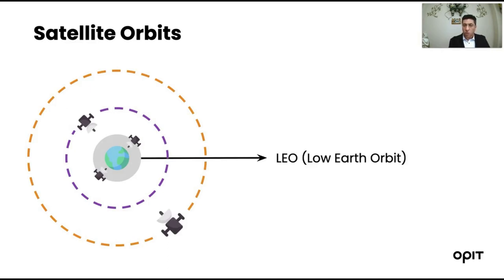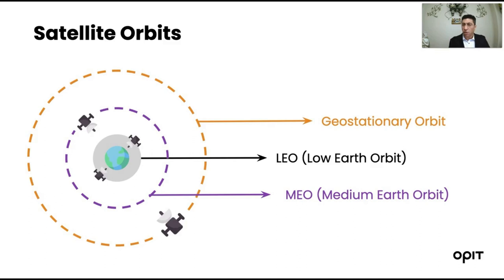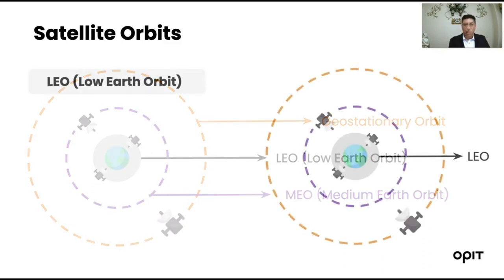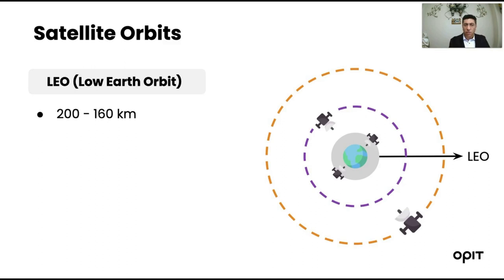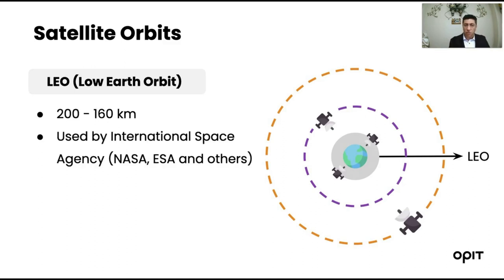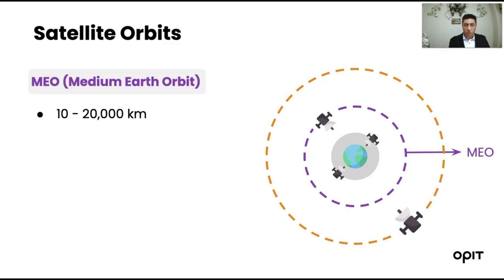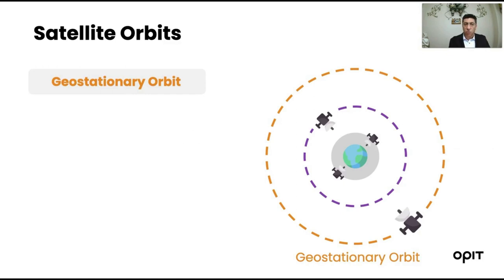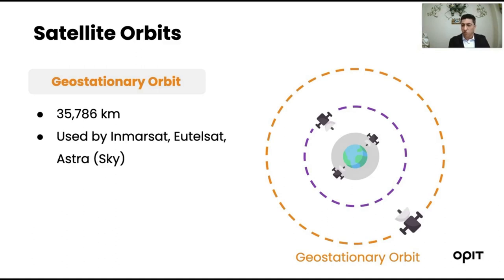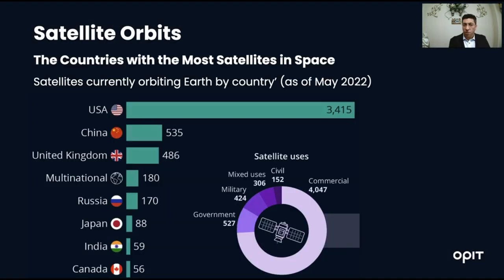Satellite orbits is a very important topic. There are three major orbits: LEO (Low Earth Orbit), MEO (Medium Earth Orbit), and GEO (Geostationary Orbit). LEO is around 200 to 1,600 kilometers above Earth's surface, used by space agencies like NASA and ESA, and recently by internet service providers. It has around 10 to 100 milliseconds of delay. MEO is around 10,000 to 20,000 kilometers above Earth, used mostly for GPS services. The geostationary orbit is around 35,000 to 36,000 kilometers above Earth's surface and is used by certain satellites for video services.